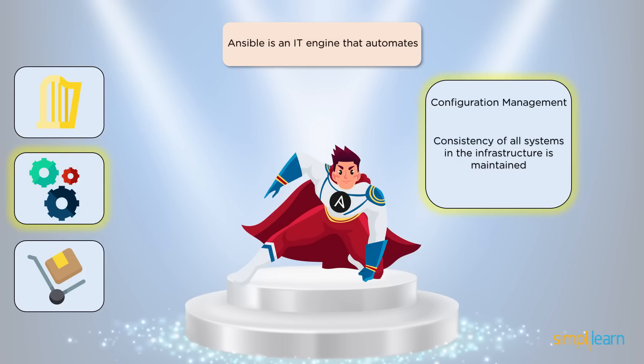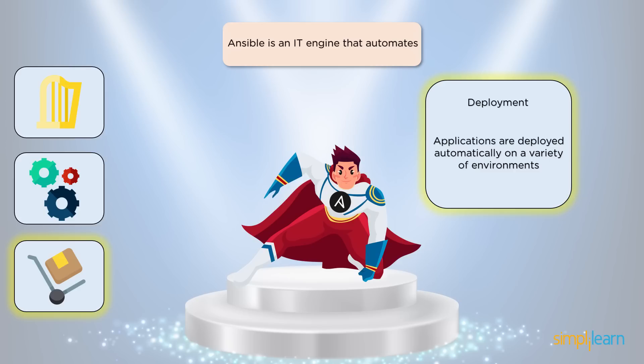Next, Ansible automates configuration management. Configuration management simply means that all the systems are maintained at a consistent desired state. Other tools that automate configuration management include Puppet and Chef. And finally Ansible automates deployment — deploying applications onto your servers of different environments. If you have to deploy an application on 10 systems with different environments, you don't have to manually do this anymore because Ansible automates it for you. Ansible can also ensure that these applications or the code are deployed at a certain time or after regular intervals.